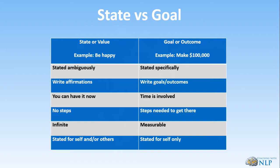With states, you can actually have it now, whereas with a goal there's going to be time involved — steps that need to happen — and then you'll be able to measure it at the end to see whether or not you've achieved it. With a state, there are actually no steps involved and it can be infinite. If you want to feel happy, just feel happy. We'll look at anchoring and how you can control your state — you can fire your resource anchor and feel happy now.